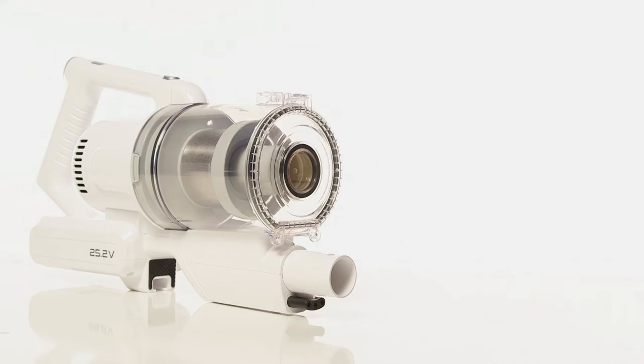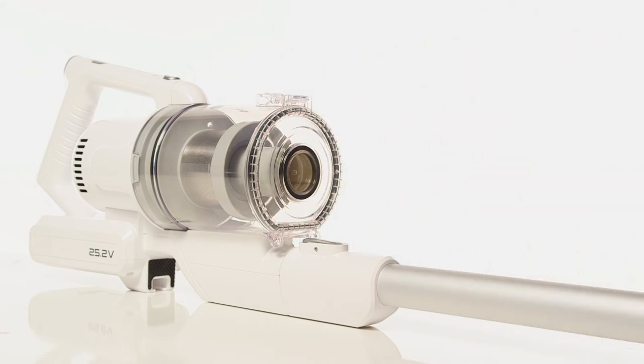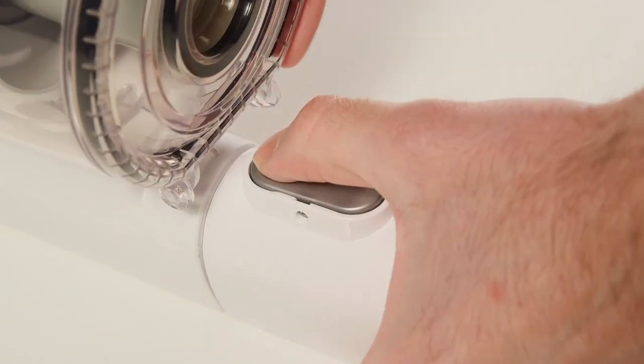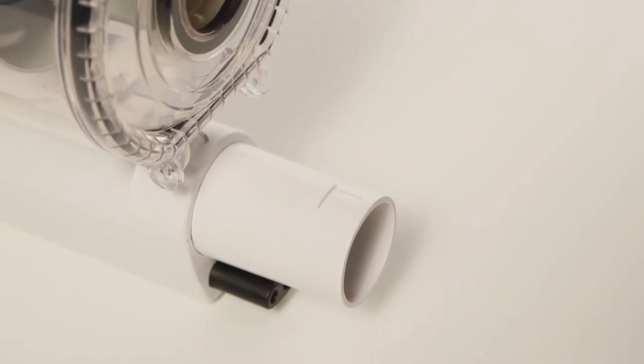Attach the extension tube by sliding it into the main vacuum body ensuring it clicks into place. Remove the extension tube by pushing the button and pulling the tube away from the vacuum body.